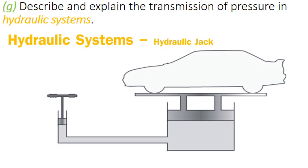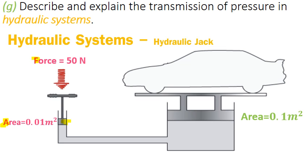Let's look at the same hydraulic jack with mathematical values. Imagine the input piston area is 0.01 m², and the output piston area is 0.1 m². If we apply a force of 50 N at the input piston, we can calculate the pressure at this point using these two values. That pressure value will be 5000 pascals.